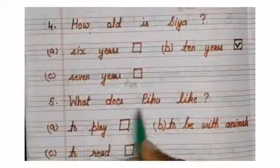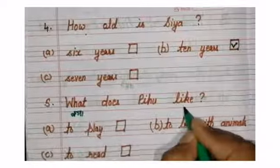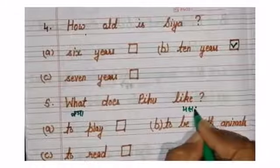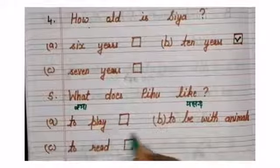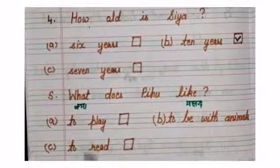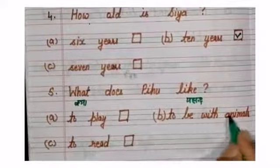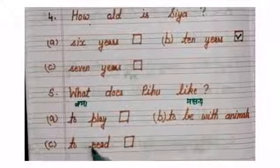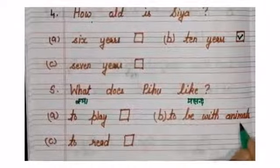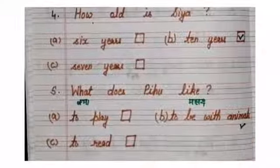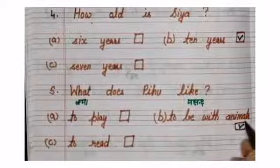Number five, what does Pihu like? What means kya? Like means pasand. Pihu kya pasand karti hai? Option A, to play. Option B, to be with animals. Option C, to read. To play means kheelna. Option B, animals ke saath rehna. Option C, to read, padhna. Then right option is, to be with animals. Pihu ko animals ke saath rehna pasand tha. This is also B part.